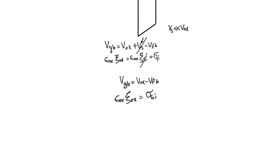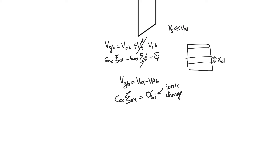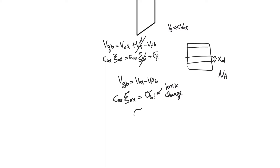In depletion mode, the accumulated charge in silicon is basically ionic charge from the depletion region. This depletion region has a certain depth called XD and a concentration of ions equal to Na. Because we are in p-type silicon, these ions are negative, so the accumulated charge is negative. The accumulated charge is therefore sigma_silicon equals minus Q times Na times XD, where XD is the depth of the depletion region.